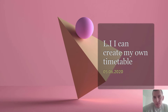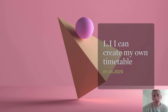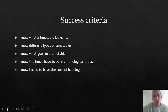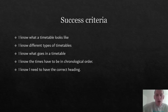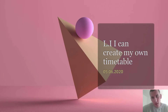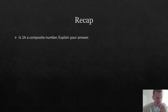Before we move on, can we all just appreciate this background? I think it is absolutely fantastic. Let's go through our success criteria for today. Our success criteria is: I know what a timetable looks like; I know different types of timetables; I know what goes in a timetable; I know that the times have to be in chronological order; and I know I need to have the correct heading. Remember, the success criteria is the steps we need to take to achieve our objective: I can create my own timetable.